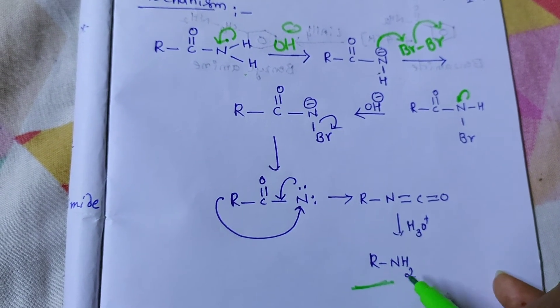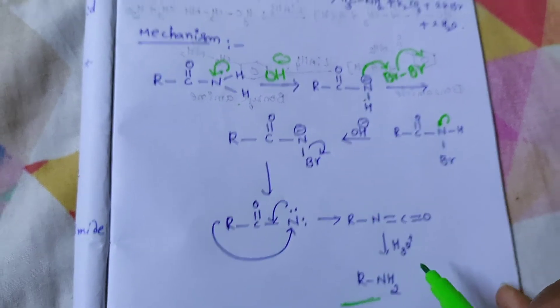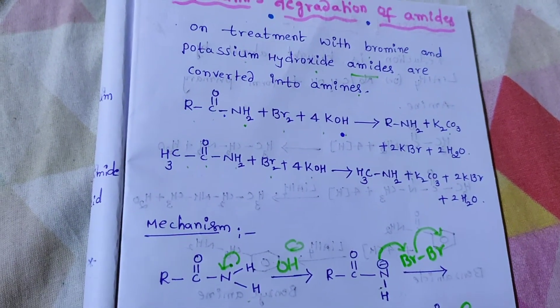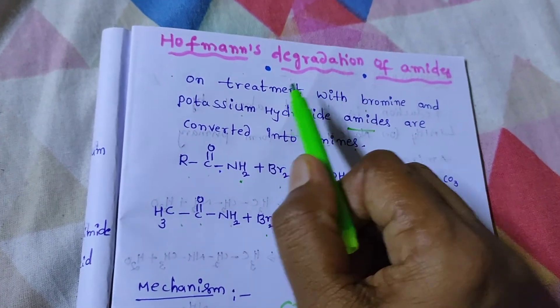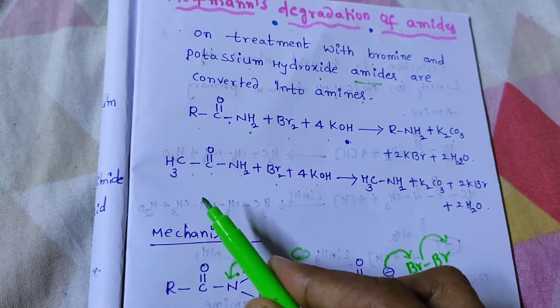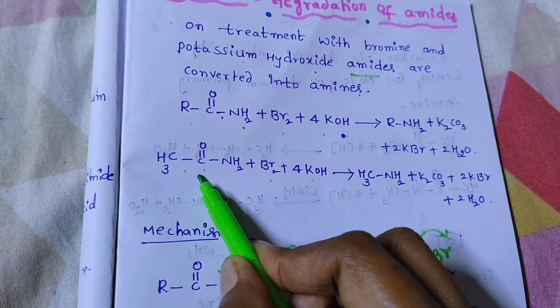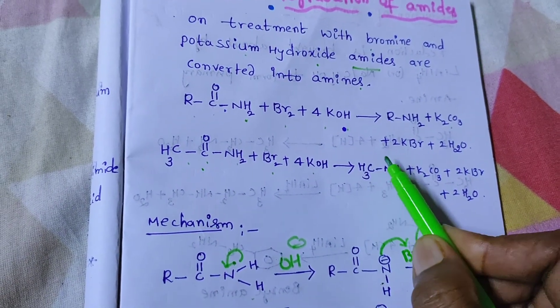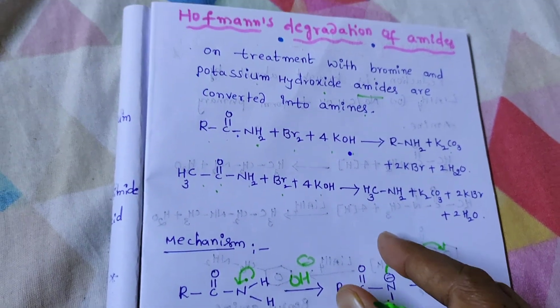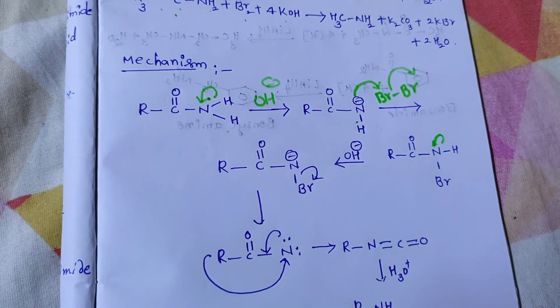So, this is Hofmann degradation of amides. Here, degradation means in reactant, we have two carbons. In product, you should have only one carbon. One carbon is less. Thank you, students.